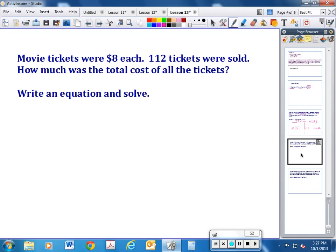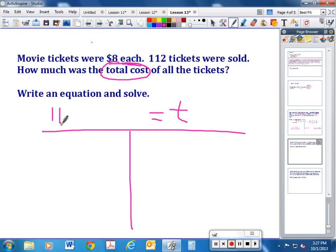All right. Let's try another one. Movie tickets were $8 each. Guys, 90% of these equal groups problems are going to have the word 'each' or the word 'per'—like per hour or per item or something like that in it. 112 tickets were sold. How much was the total cost of all the tickets? Well this time we don't know the total, but we do know that we have 112 tickets and they cost $8 each. And you would solve that, and your label of course then would be with the dollar sign because you're talking about money.